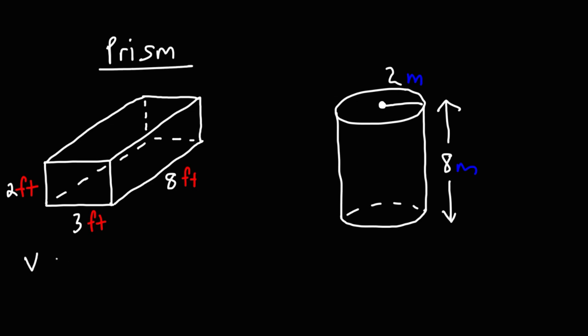The formula that we need is V = length times width times height. So we have a length of 8 feet, a width of 3 feet, and a height of 2 feet. So it's going to be 8 feet times 3 feet times 2 feet.